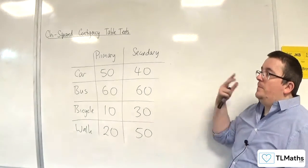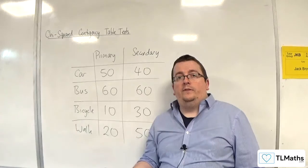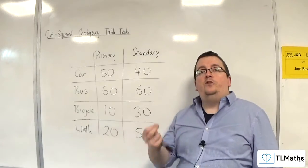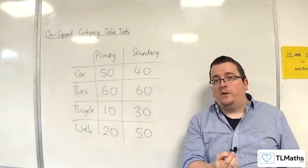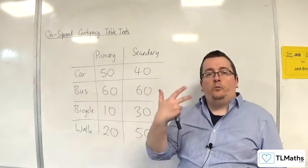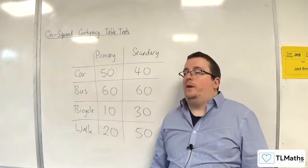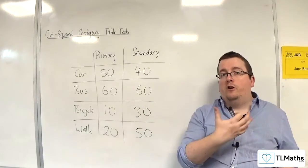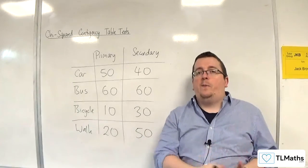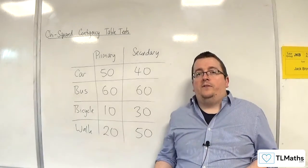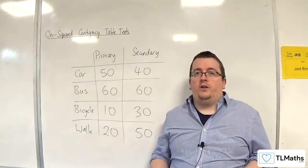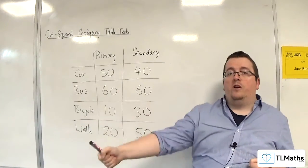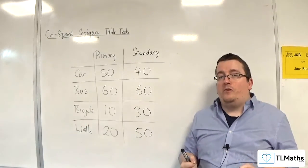We then compare the expected and observed frequencies, and we construct what's known as the chi-squared statistic from that. That is the value we compare against a critical value from statistical tables in the formula booklet — and that's where the hypothesis test comes in. It essentially means that if what you've got in your table is far away from the expected values if they were independent, that would be telling you there's likely to be an association between the two variables — that it does make a difference between going to primary school or secondary school and the methods of travel they use.